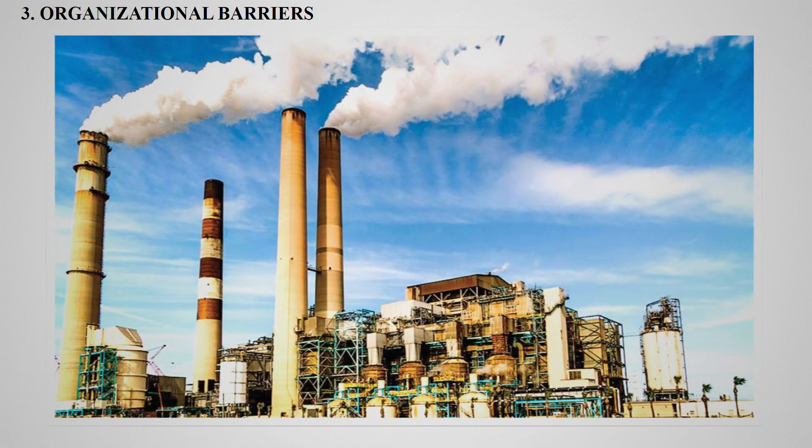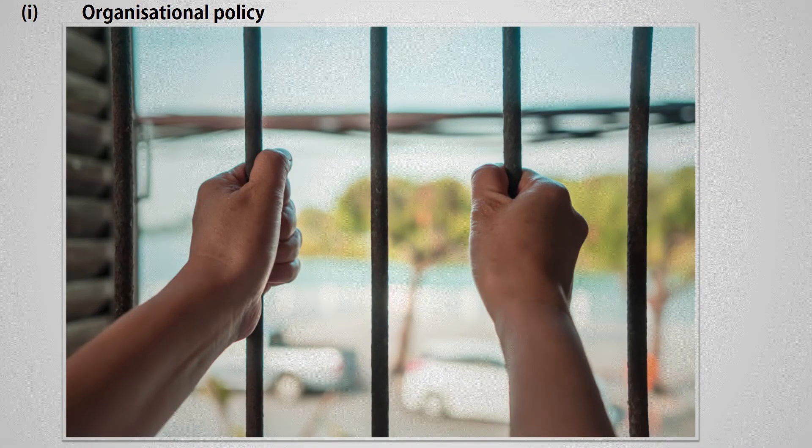Moving on to organizational barriers — reasons related to organization structure, such as authority relationships, rules, and regulations, may become barriers to effective communication. We will now discuss some of these barriers one by one.